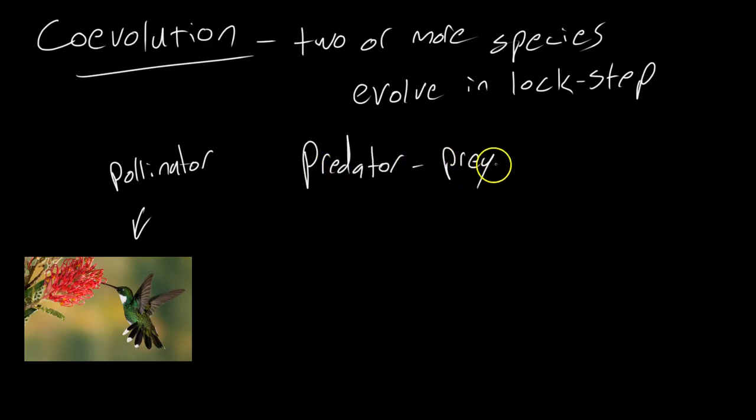But also predator prey can be coevolution, and this is what we consider antagonistic. Basically this is the better mousetrap situation. If you build a better mousetrap, nature's going to provide a better mouse. So the predator will evolve an evolutionary advantage that allows it to hunt the prey better, and the prey will hopefully have some variation within its population to allow it to evade that predator. And because of that, it drives natural selection in both directions. It drives it for the predator and the prey.